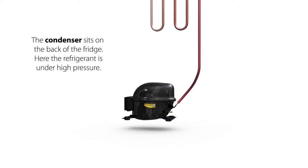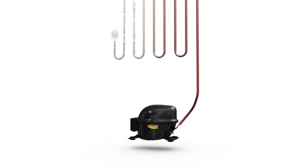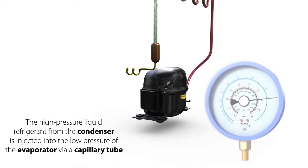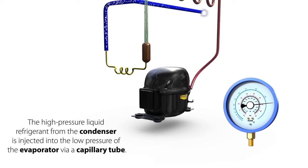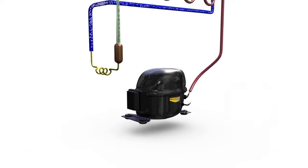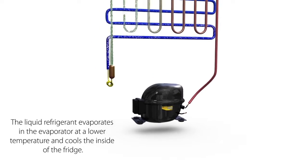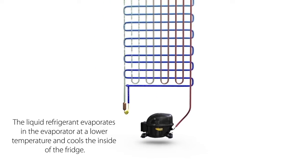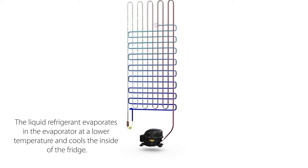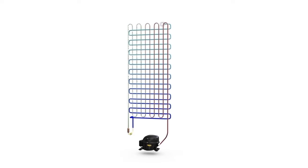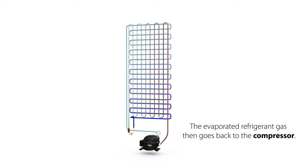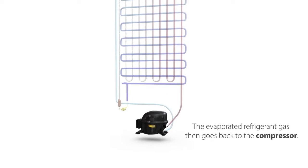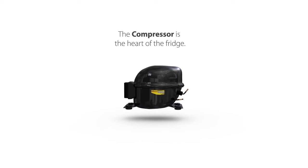The high-pressure liquid refrigerant from the condenser is injected into the low pressure of the evaporator via a capillary tube. The liquid refrigerant evaporates in the evaporator at a lower temperature and cools the inside of the fridge. The evaporated refrigerant gas then goes back to the compressor. The compressor is the heart of the system.